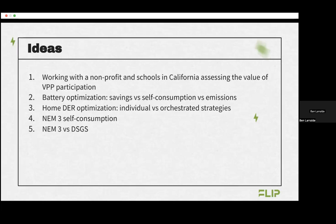Depending on what the homeowner's goal is — whether they're trying to optimize for savings, self-consumption, or emissions — how does it affect the other variables? For instance, if you try to optimize for savings, how much will you self-consume and how much carbon will you emit? If you try to optimize for emissions, how much will it cost you? These trade-offs are interesting for Flip to model so that when we offer optimization in the future, we know what trade-offs we're making.